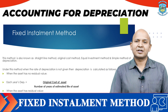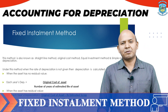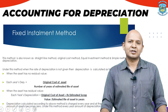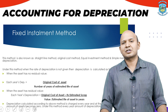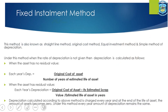Fixed installment method is also termed as original cost method, straight line method, equal investment method, as well as simple method. In this method, if the rate of depreciation is not given, then the amount of depreciation will be calculated with the help of the following formula.